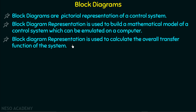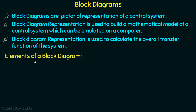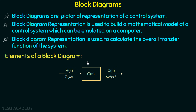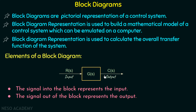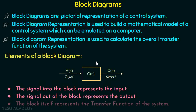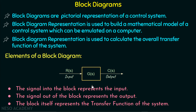Now we are done with the introductory points of block diagrams. We will now discuss the elements of a block diagram. We will start with the basic block diagram representation of a control system that we already discussed in chapter one. This representation consists of a block having two arrows. The arrow or signal going into the block represents the input, the signal going out represents the output, and the block itself represents the transfer function of the system.